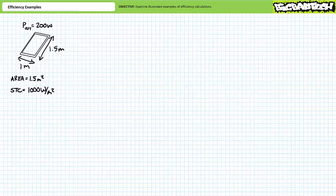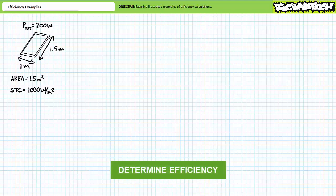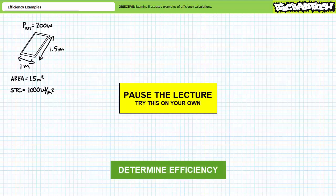Consider a solar panel with a surface area of 1 meter by 1.5 meters, or 1.5 meters squared. A common performance measurement uses Standard Temperature and Conditions (STC), whereby the panel is exposed to light with an intensity of 1,000 watts per meter squared. At STC, this solar panel produces 200 watts of usable electrical power output. See if you can determine the efficiency of the solar panel. Pause the lecture and try this on your own.